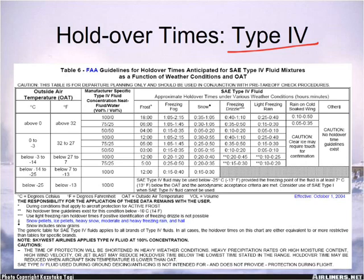The reason we have so many different types of precipitation for winter precipitation listed in the METAR is because you can see here we have guidelines for frost, we have guidelines for snow, for freezing drizzle, for light freezing rain, and then rain on a cold-soaked wing.